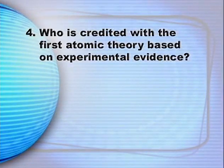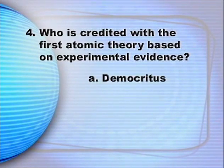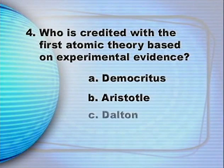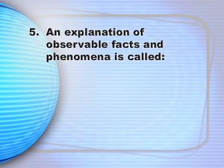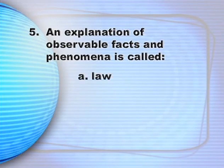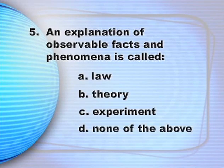Question number four: Who is credited with the first atomic theory based on experimental evidence? A. Democritus. B. Aristotle. C. Dalton. D. Rutherford. Final quiz question: An explanation of observable facts and phenomena is called — A. A law. B. A theory. C. An experiment. D. None of the above.